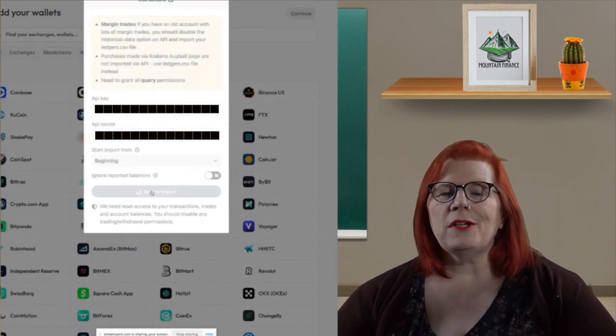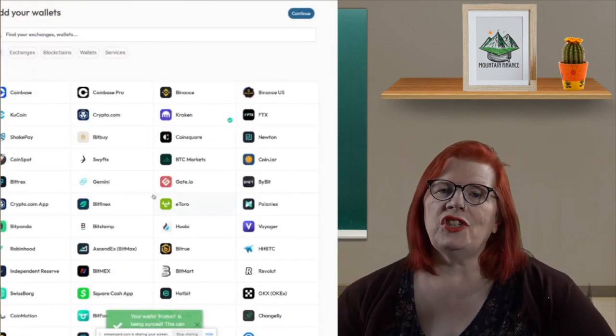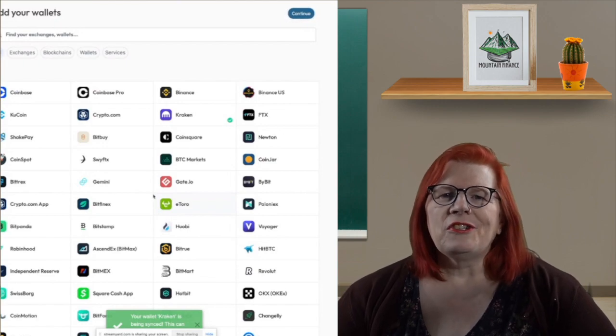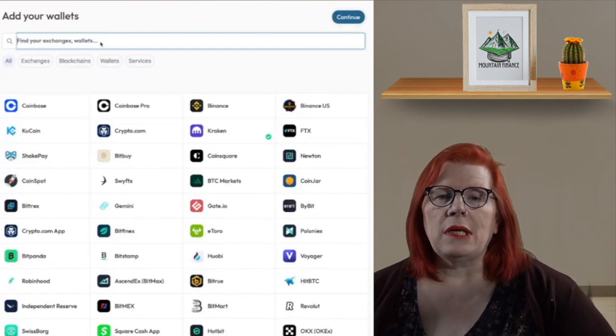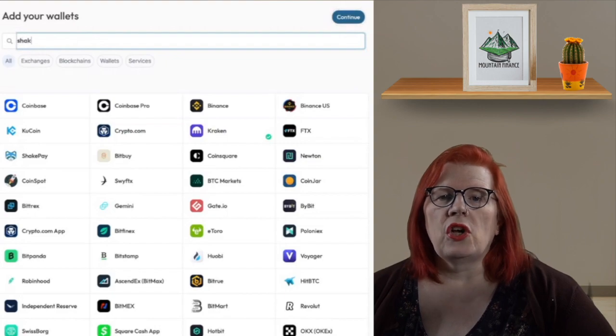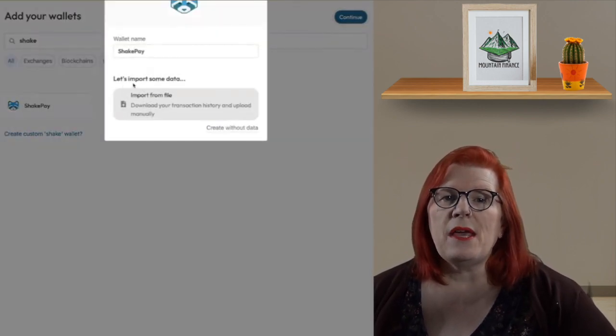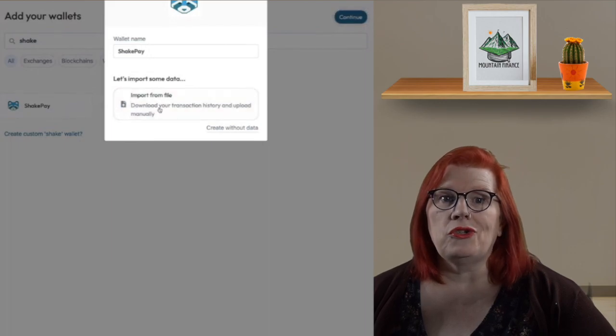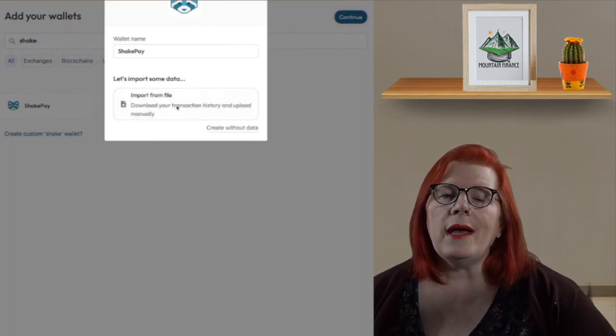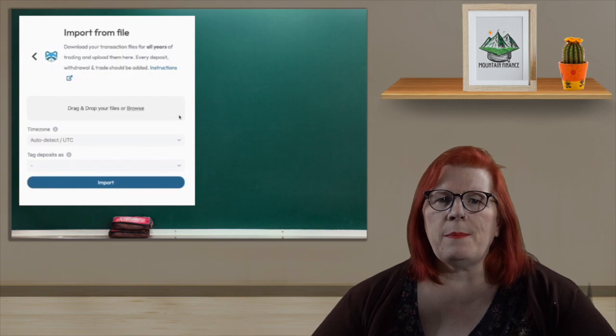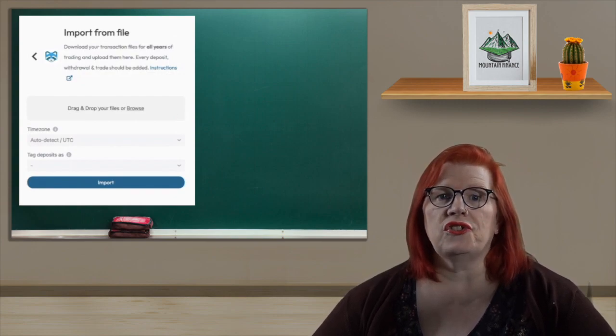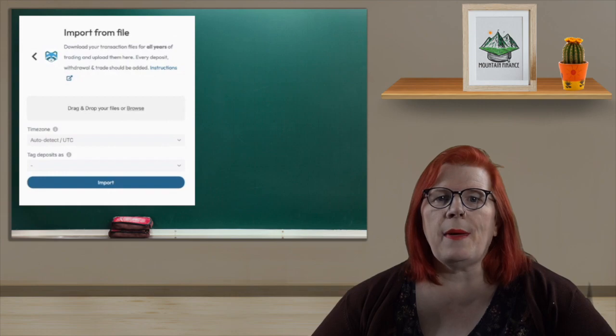After importing my information from Kraken, I am going to move over to ShakePay. I could not see ShakePay on the main screen, so I just typed it in the search. With ShakePay, you have to import the data via the CSV file that ShakePay will send you via email when you ask for it. Just go to your ShakePay and go to Settings and then Request Transaction Summary. Once you have it from ShakePay, just upload it to Coin.ly.